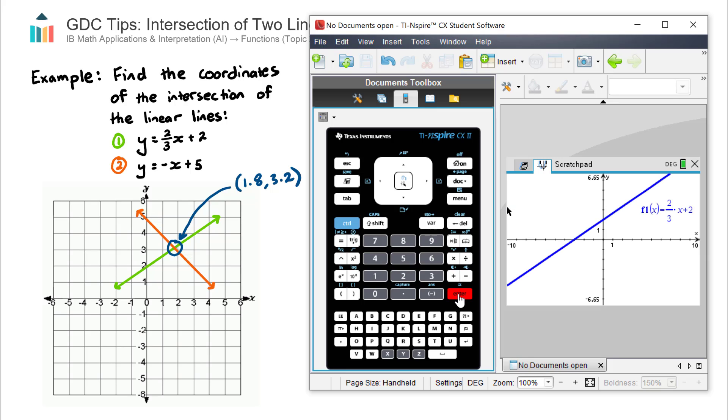Now in order to enter the second equation, we hit this tab button. Now we enter our second linear line equation. So negative X plus five. And there's our second line there.